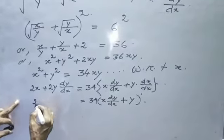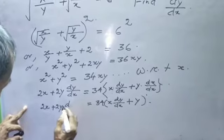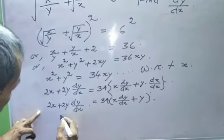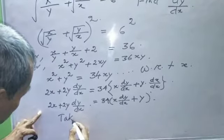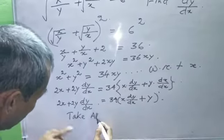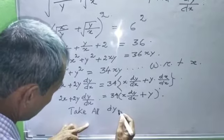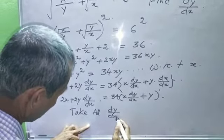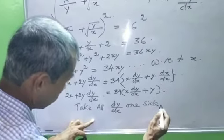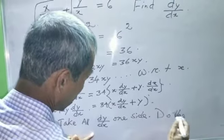2X plus 2Y DY by DX. Take all DY by DX to one side. Now, the rest.